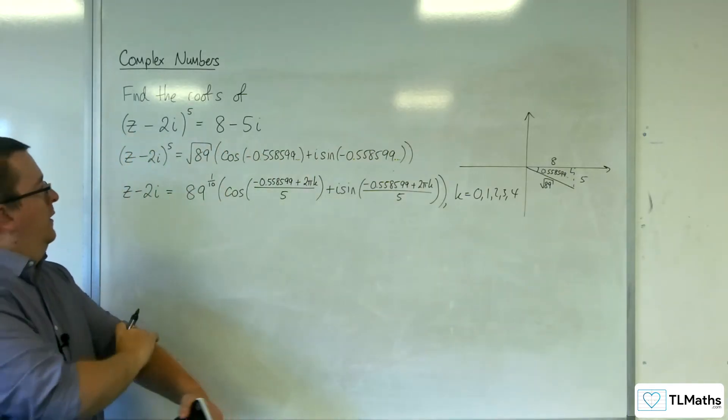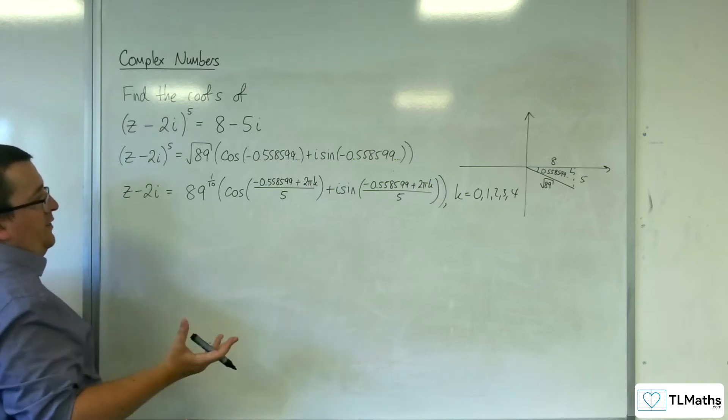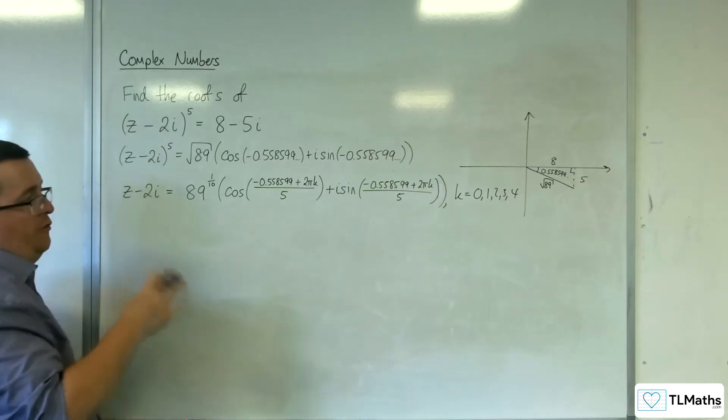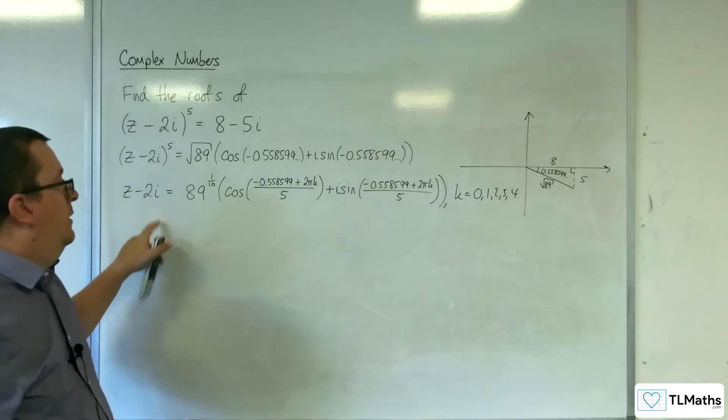Right. So all I need to do then is substitute in 0, 1, 2, 3, 4, and then just add 2i on the end for each one.